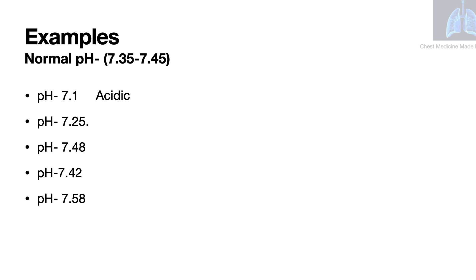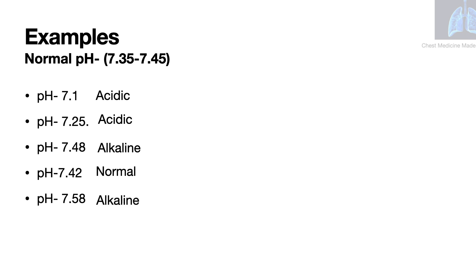The second pH is 7.25 — it is acidic. The third pH is 7.48; you would note that it is more than 7.45, so this is an alkaline pH. The next pH is 7.42; this is within the normal range, so this is a normal pH. The last pH for this exercise is 7.58, and it should be clear that this is an alkaline pH.